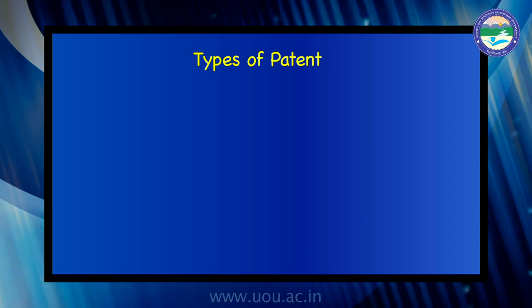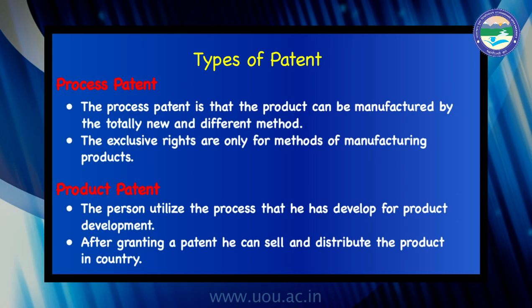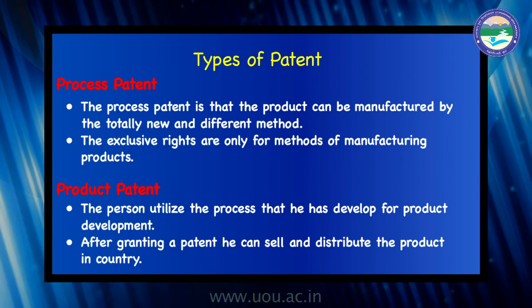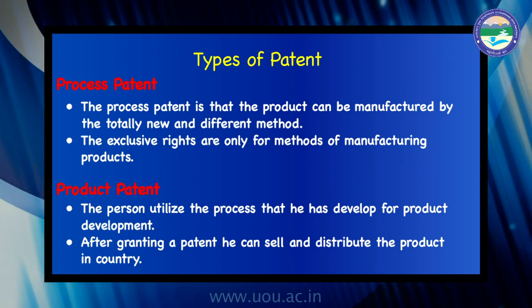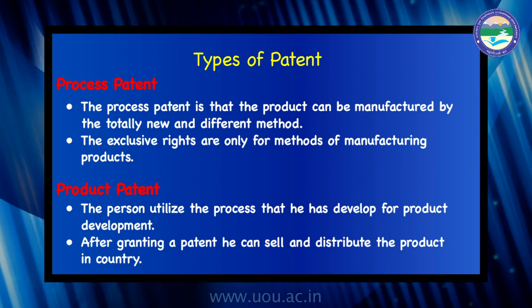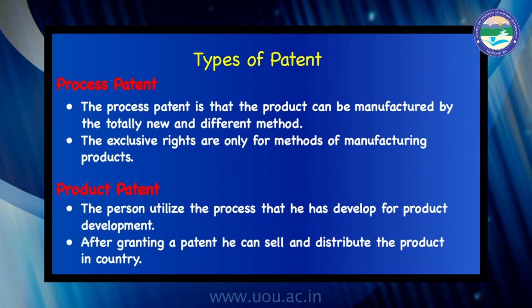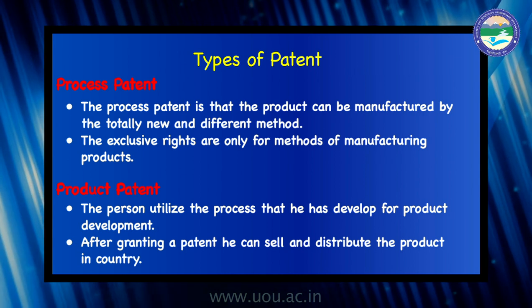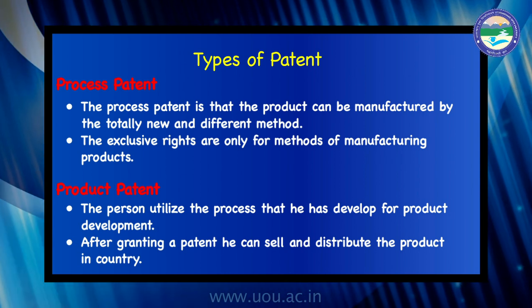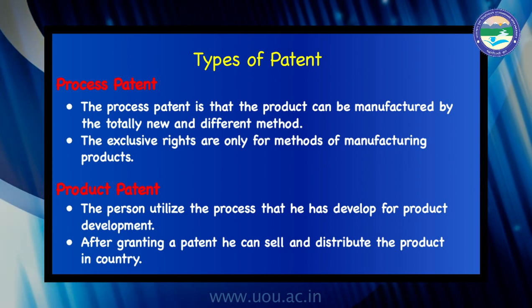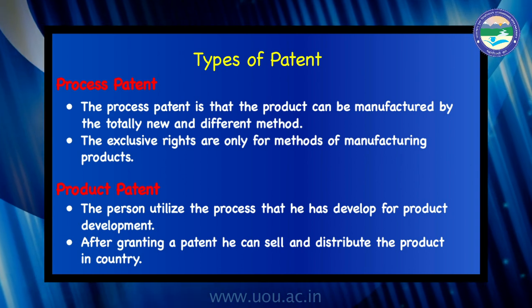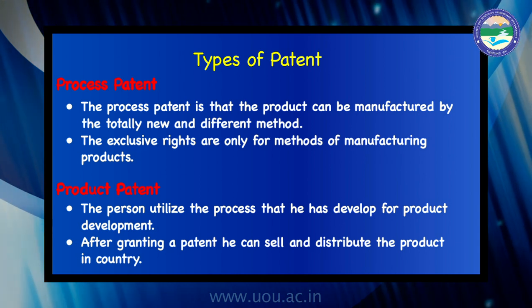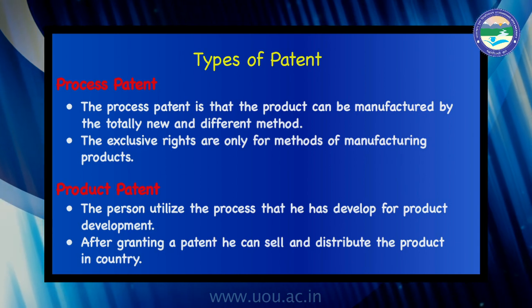Patents are of two types: process patent and product patent. A process patent means the product can be manufactured by a totally new and different method, and the exclusive rights are only for the methods of manufacturing the product. In a product patent, the person utilizes the process he has developed for product development, and after granting a patent, he can sell and distribute the product in the country.